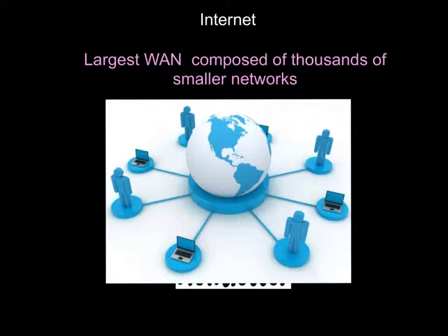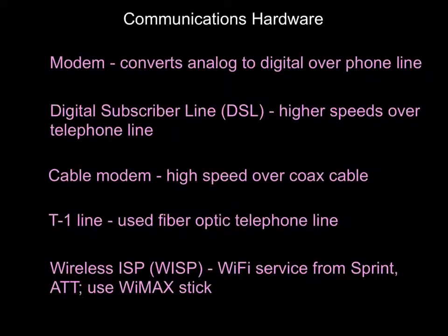The last type of network is the internet. It's the largest WAN, or wide area network, that is composed of thousands of smaller networks. The web is the most popular service on the internet, along with email. In order to use the internet effectively, we want to be able to transmit and receive data, so we use communication hardware devices.